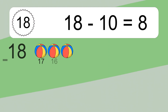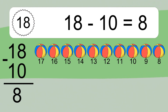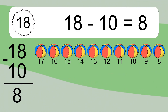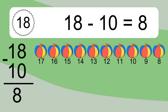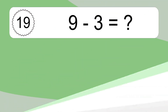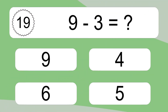18 minus 10 equals what? 18 minus 10 equals 8. Let's count it: 17, 16, 15, 14, 13, 12, 11, 10, 9, 8.